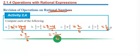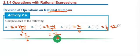Division by a rational number means multiplying by the reciprocal. The reciprocal of two over three is three over two. Then one times three is three, over two times two, which is four. So the result is three over four.